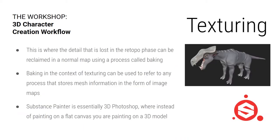Texturing — when you actually start the unwrapping or texturing phase, this is where you can start getting back the detail you lost in the retopo phase. You can reclaim it using the normal map through a process called normal map baking, or just baking in general. Baking in the context of texturing refers to any process that stores mesh information in the form of an image.